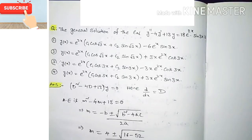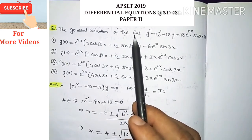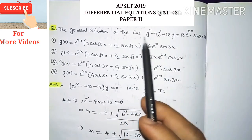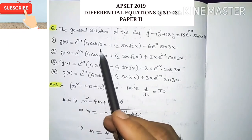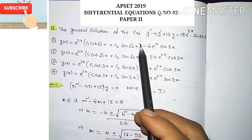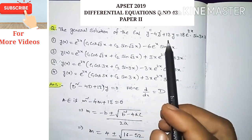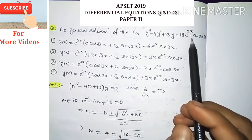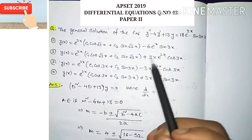Hi everyone, this is Ram Krishna. Welcome to my channel. In this video I'm going to discuss the 2019 differential equations question number 43 from Paper 2. The question is: find the general solution of the equation y'' - 4y' + 13y = 18·e^(2x)·sin(3x).